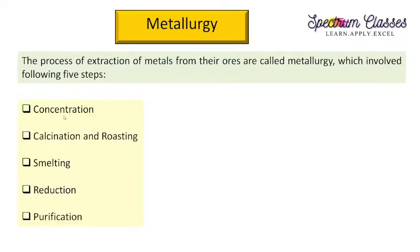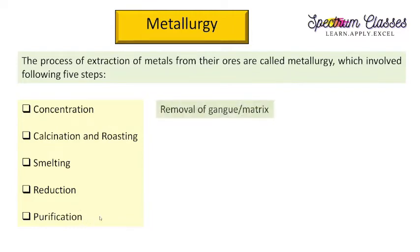The steps involved in metallurgy are: concentration of ores, calcination and roasting of the ores, smelting of the ores, reduction, and purification of the impure metal.